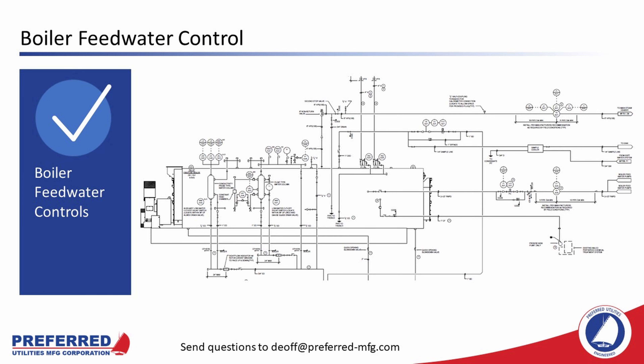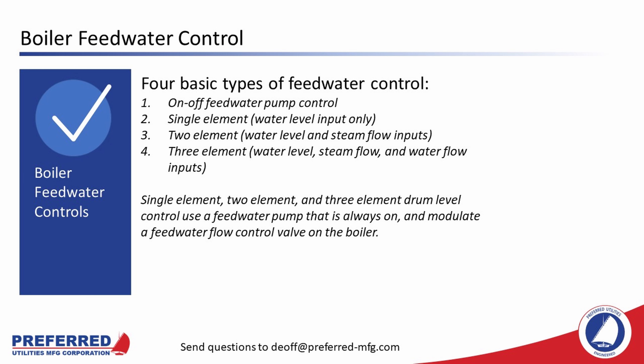Our next topic is boiler feed water control. As steam leaves the boiler, it needs to be replaced with water. Water level control is critical: if the water level gets too low, it exposes the boiler tubes and they can overheat and rupture. If the water level gets too high, water can get carried into the steam distribution piping, causing it to swing around with scary noises as slugs of water work through the piping — and if the steam is feeding a turbine, you really don't want slugs of water hitting the turbine blades. There are four basic types of feed water control: on-off feed water pump control, single element feed water control (drum level only), two element feed water control (water level and steam flow), and three element water level control (drum level, steam flow, and water flow).